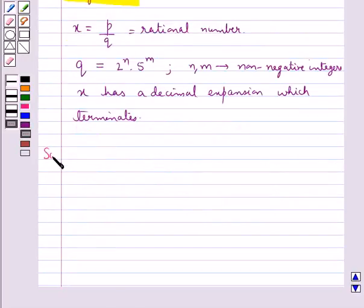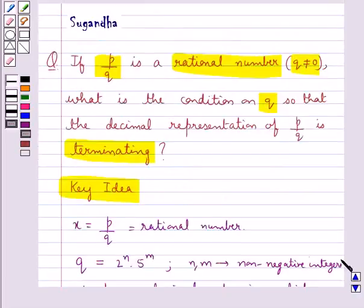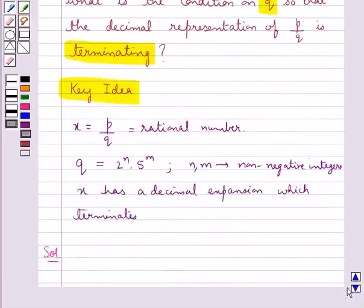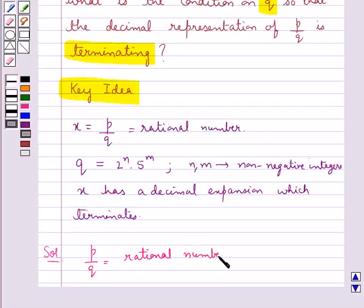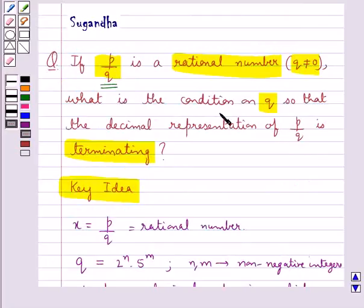Now let's move on to the solution. We are given the rational number P upon Q — that is, P upon Q is a rational number with Q not equal to 0. We need to find the condition on Q so that the decimal representation of P upon Q is terminating.